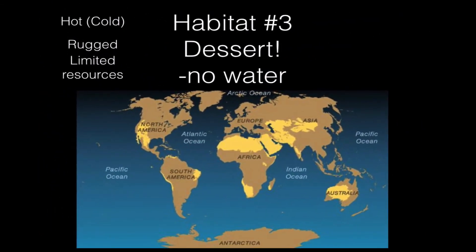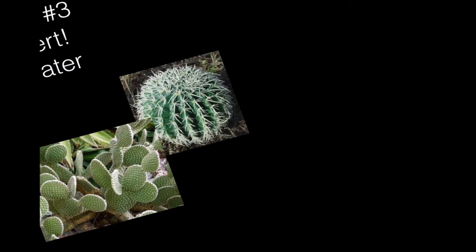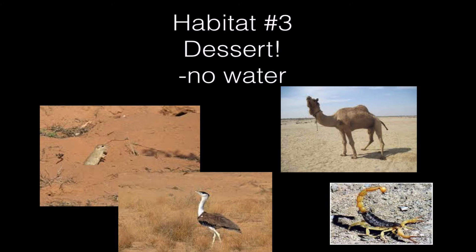Now we're into the desert — deserts are typically very hot, but there are some Asian deserts that are cold. They're very rugged with very limited resources, meaning very little water. That by definition is what a desert is. Here's an adaptation: we have different cacti — juicy and full of liquid — that have developed spikes so hopefully no animals will try to eat them. Different animals have adapted to the dry climate: the camel stores fat in its hump as a source of liquid and can survive for two weeks. A prairie dog lives underground where it's a bit cooler.